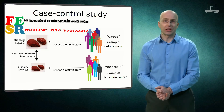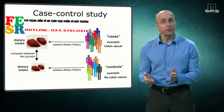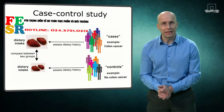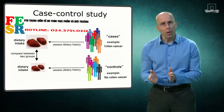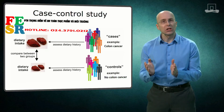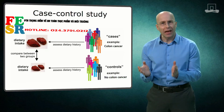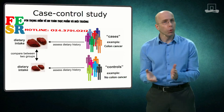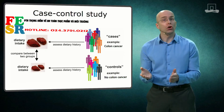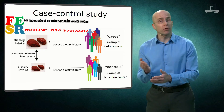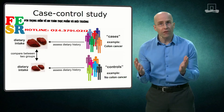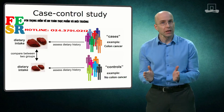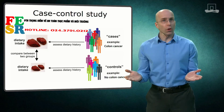The weakness of case-control studies is that they are prone to different types of bias. The most common one is selection bias. Imagine that the colon cancer patients are recruited from one hospital in a poor part of town, whereas the controls are recruited from a private clinic. Obviously, the dietary habits of the two groups will be quite different without having anything to do with colon cancer.